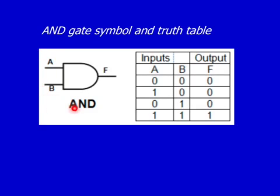This is the AND gate with two inputs and one output. Both inputs had to be on for the output to be on. So this is the only situation where the output is on.